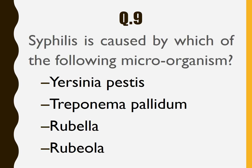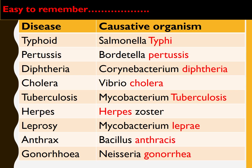Question number 9: Syphilis is caused by which microorganism? Options are Yersinia pestis, Treponema pallidum, Rubella, and Rubeola. The answer is Treponema pallidum. Here we have the major diseases and their causative organisms.